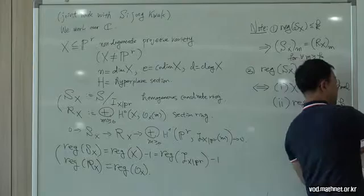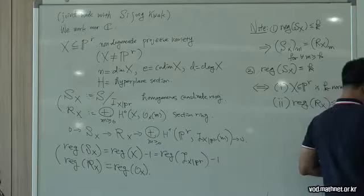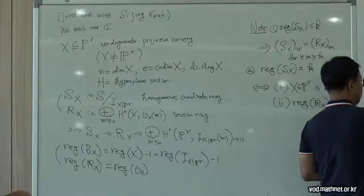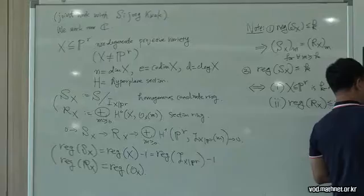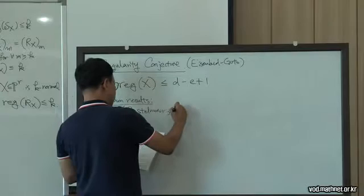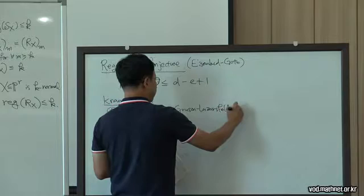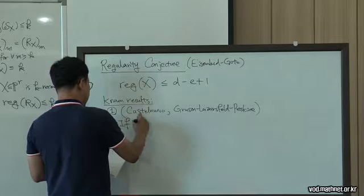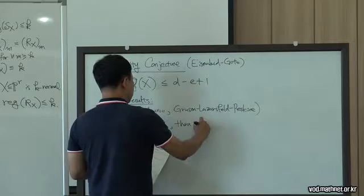I'll give a quick review of known results. The first is due to Castelnuovo for space curves, and later Gruson, Lazarsfeld, and Peskine. If X is a curve, then the regularity conjecture holds.